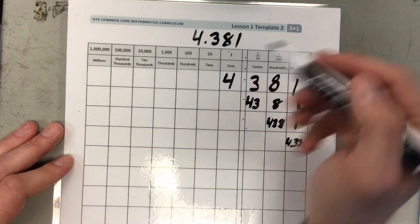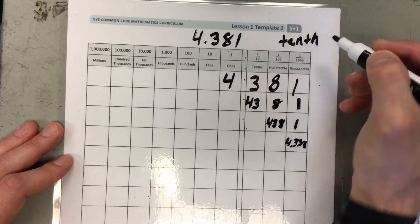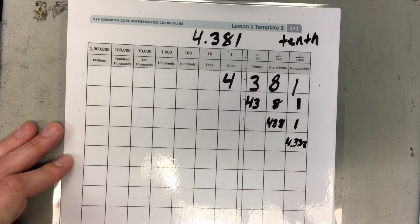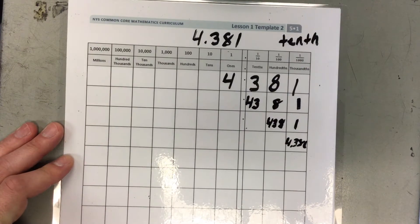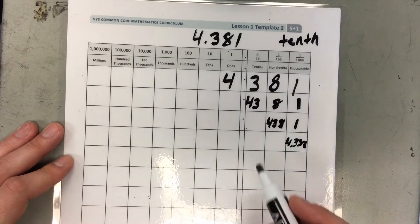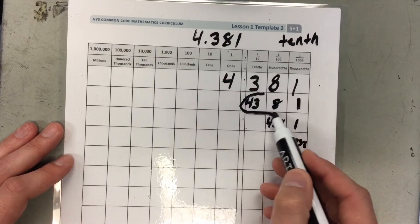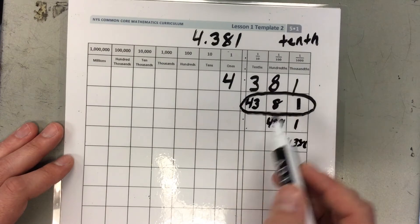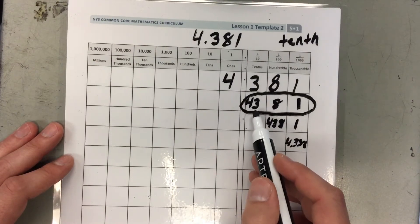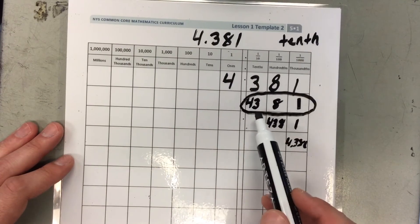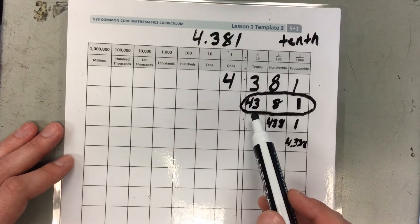Now, if I'm rounding to the nearest tenth, which decomposition helps me see where this number is at and how I can set up my number line? If I'm rounding to the tenths position, I would use this decomposition. As you can see, I have 43 tenths. That means this number is somewhere between 43 tenths and 44 tenths.